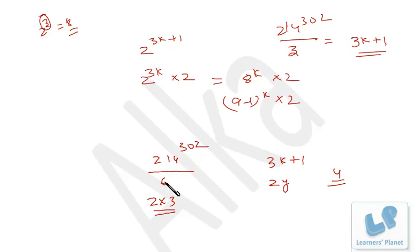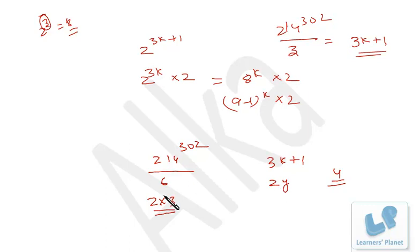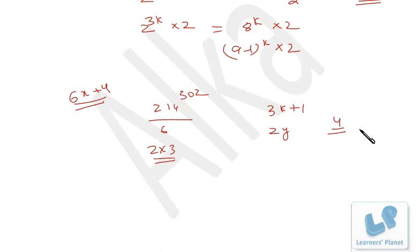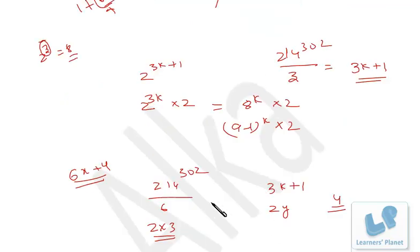So 214 raised to 302, when divided by 6, gives remainder 4. To find the common remainder fulfilling both conditions — the number must be 1 more than a multiple of 3, and also a multiple of 2 — since 2 and 3 are factors of 6, we can write 214 raised to 302 as 6x plus 4 format.